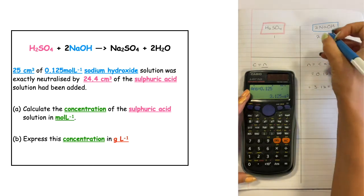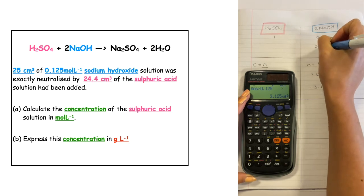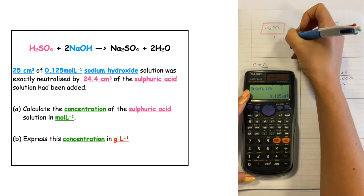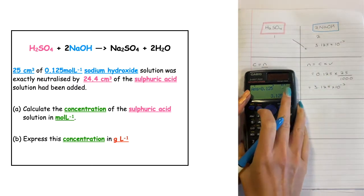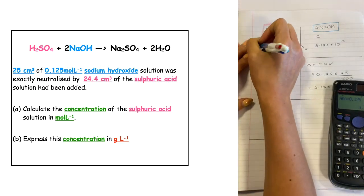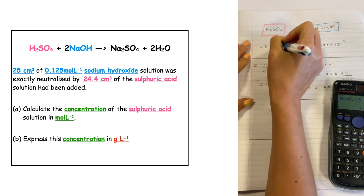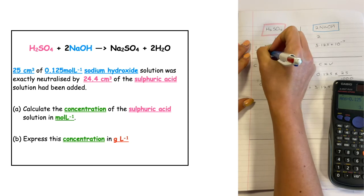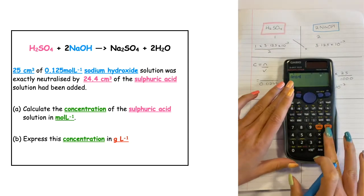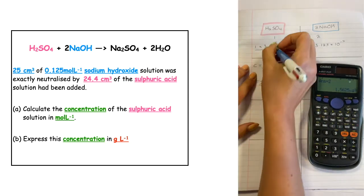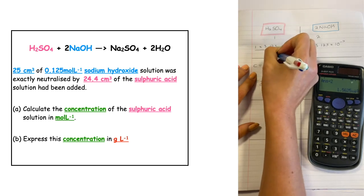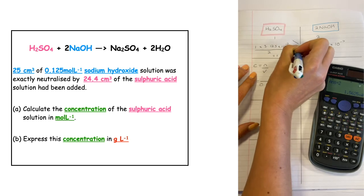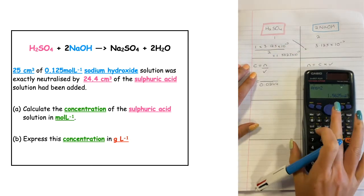We need to quantify it and scale down using the mole ratio. We put 3.125 times 10 to the minus 3 into the mole ratio and cross multiply. So on the acid side we calculate 1 times 3.125 times 10 to the minus 3, divided by 2. That gives us 1.5625 times 10 to the minus 3 moles of sulfuric acid that actually reacted.